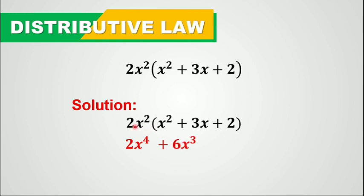And then 2x squared times positive 2 is positive 4x squared. So therefore, 2x squared times the quantity of x squared plus 3x plus 2 is equal to 2x to the fourth power plus 6x cubed plus 4x squared. Now let's try one more example.